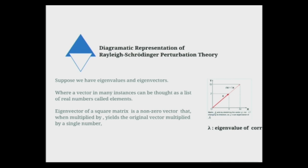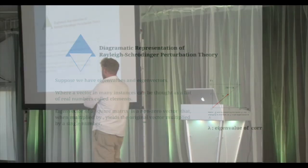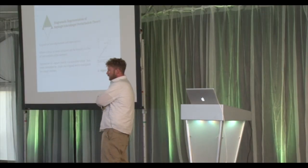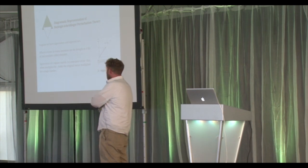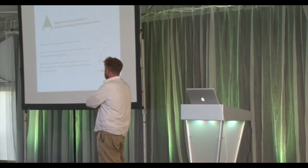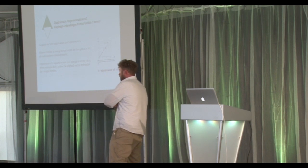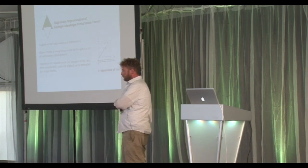Eigenvalues can't be in the middle — they're this or that. If you have an eigenvector, that vector can be modified across the whole list of items. In many instances it can be thought of as a list of real numbers called elements — an eigenvector.